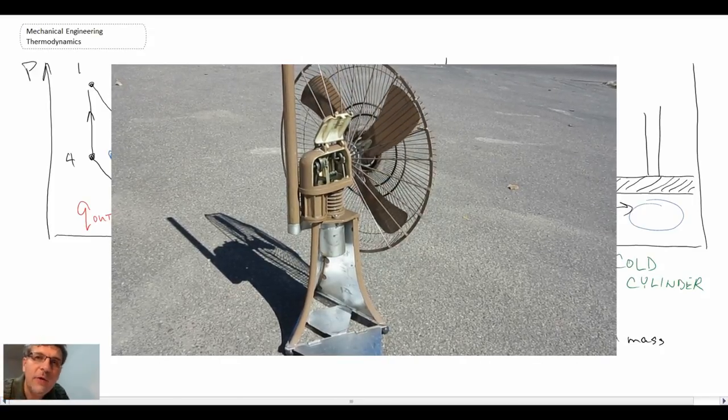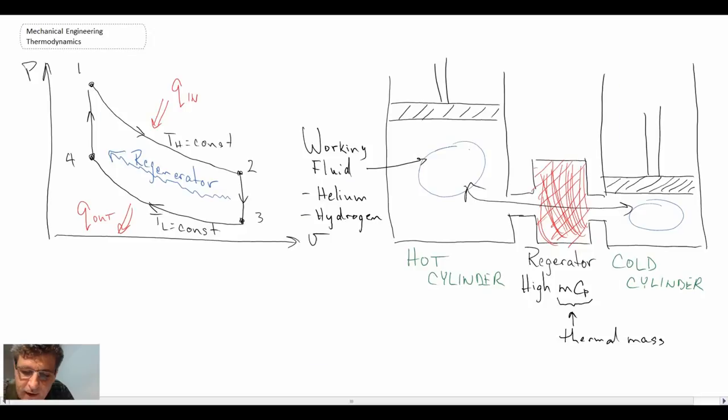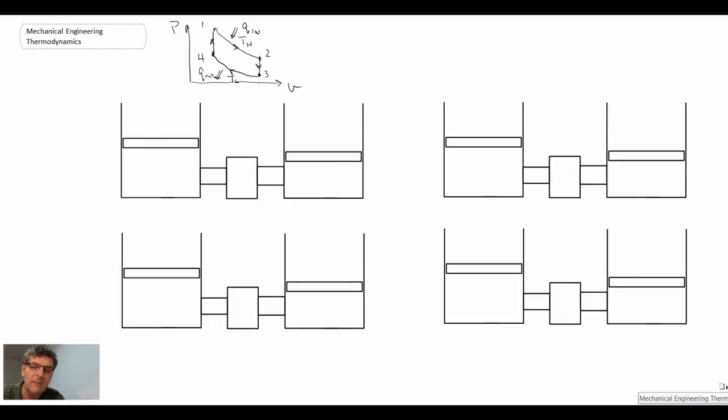So that's the Stirling engine in operation. You can see the working mechanism. It's kind of a complex working mechanism within the Stirling engine in order to execute the process itself. And what we're going to do now, let's take a look a little closer at what is going on within the two piston cylinder devices that are part of the Stirling.